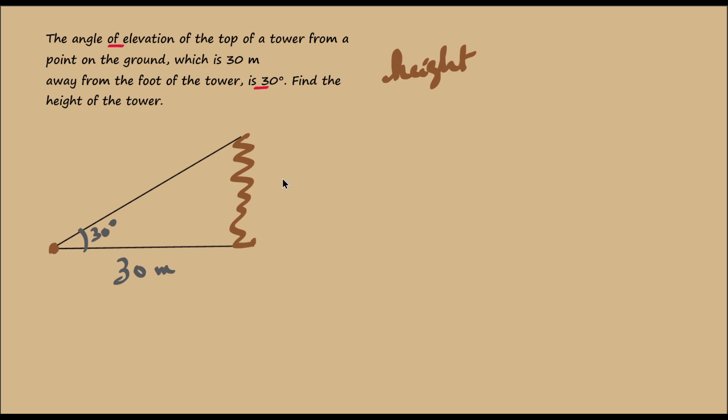And what should we find? The height of the tower. So let me assume that the height is x to start with. Now what do we know? We know the angle of elevation is 30 degrees. We know one side of this right triangle. I hope you agree with me that it is a right triangle because the tower is standing perpendicular to the ground.